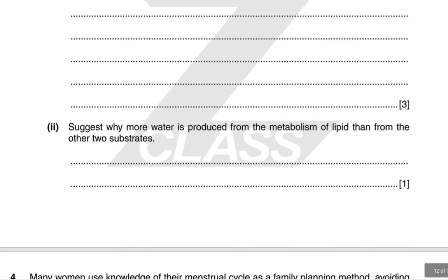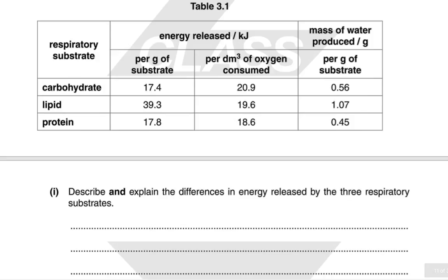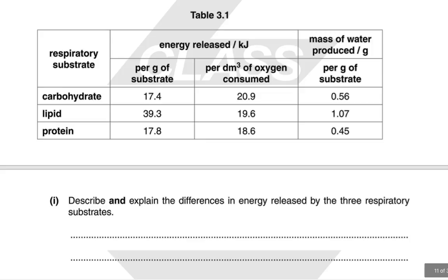More water is produced from the metabolism of lipids than from the other two substrates. This is because there are more hydrogens available to reduce oxygen to water, so more water is produced per unit mass.